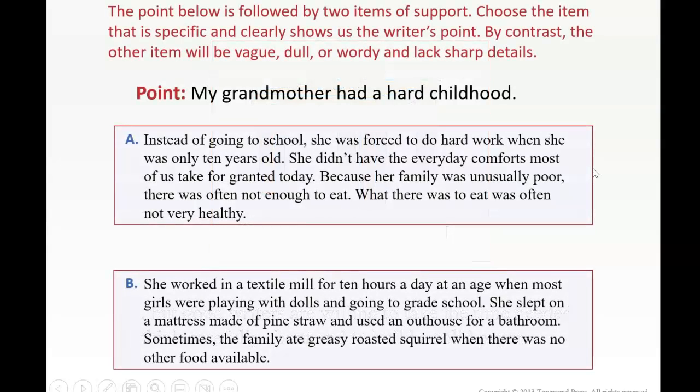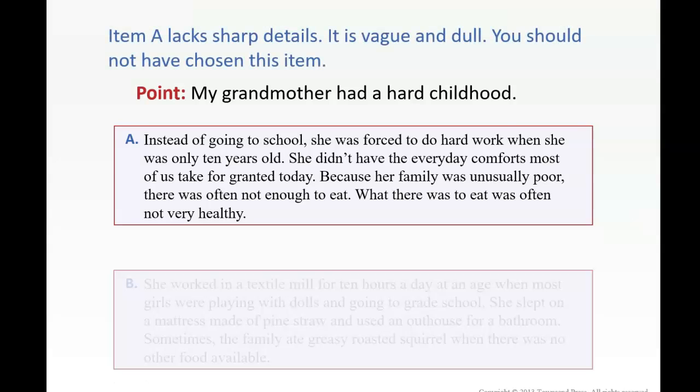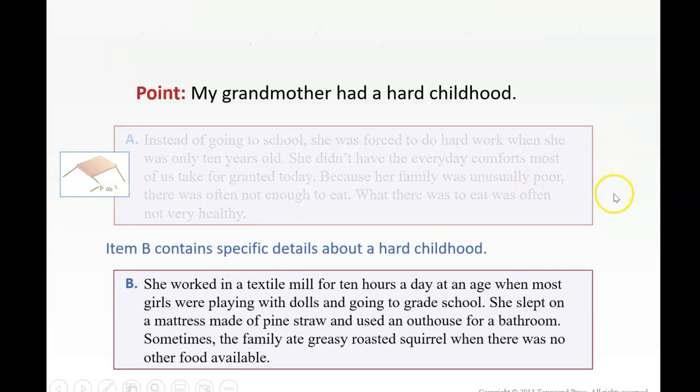Okay, let's take a look here. Read these and then we'll talk about them. So if you take a look, the topic sentence is my grandmother had a hard childhood. So the topic is my grandmother. What are we going to learn about it? She had a hard childhood. So we're going to explain or describe how she had a hard childhood. So this would be the controlling idea. A is good, but B, B is more specific, so it's more interesting to the reader. Okay, so you can see. So it lacks sharp details. It's vague and dull. And then B, specific details.